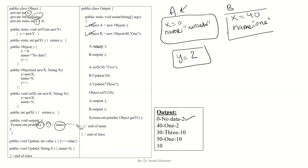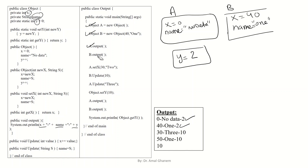The next statement is b.output(). Again we call the same output method, but for object b. For object b, x is 40, name is "1", and y is 2. So the output is: 40 - 1 - 2. We have different values of x and name, but because y is shared (static), the value of y is the same for both objects.